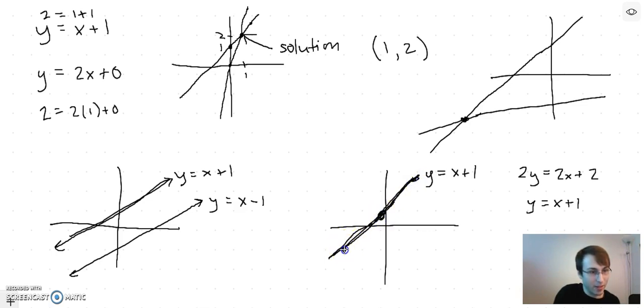And so in that case, any point you choose is going to be on both lines because they are the same line. So in that case it'd be infinitely many solutions.